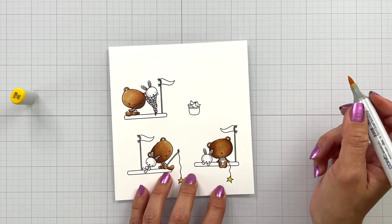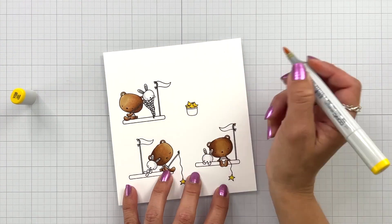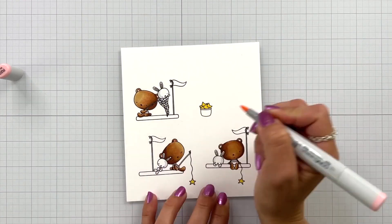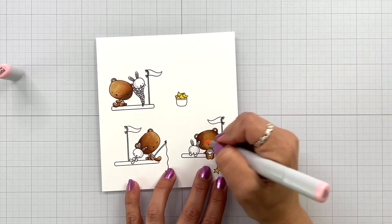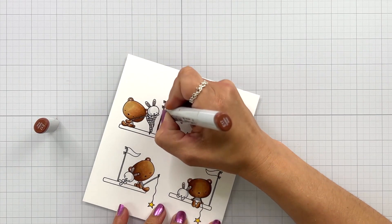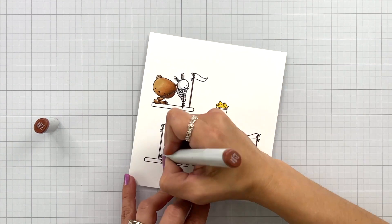I'm coloring in the stars with a Y08. For the ears on the bunny and the bear I'm just going to bring in an R20, and then for my little flagpole and the pole that's holding that net up at the top I'm just using an E17, just trying to draw in those lines.